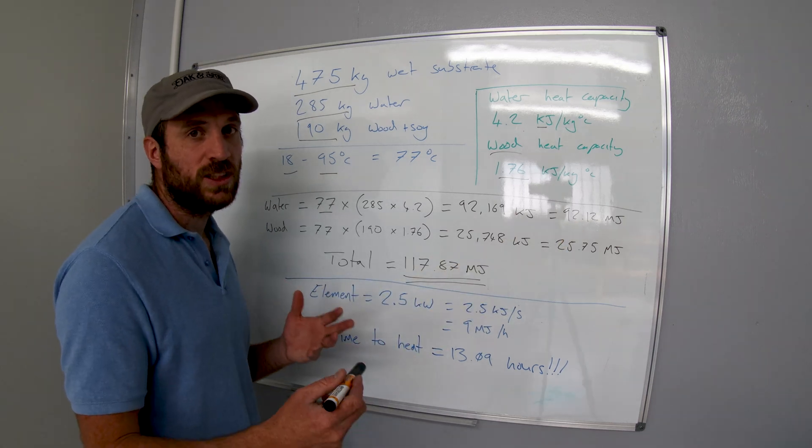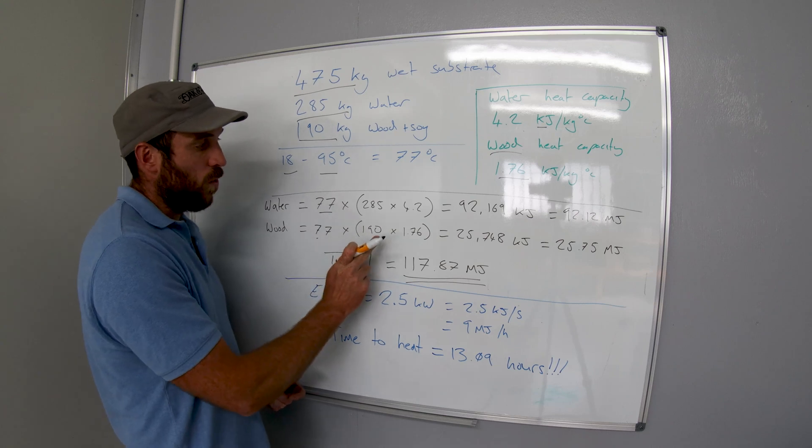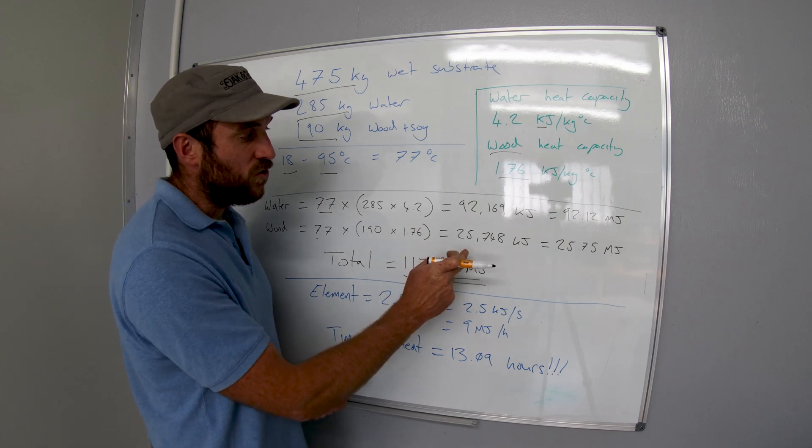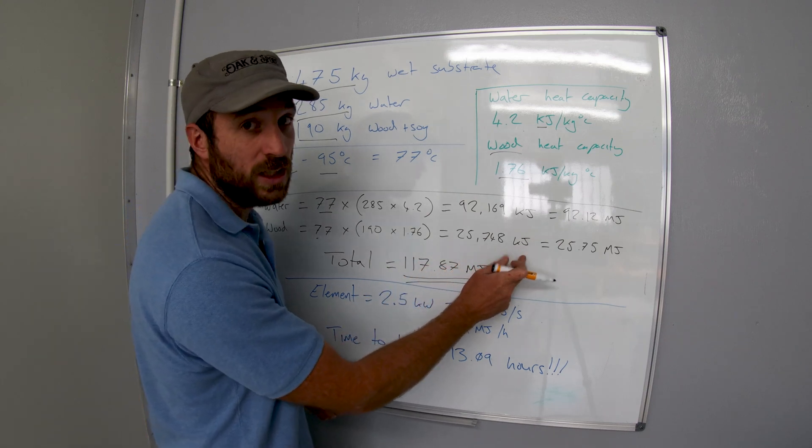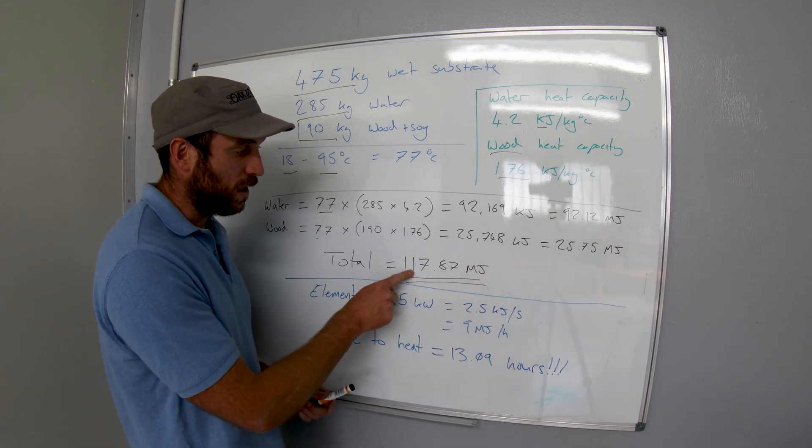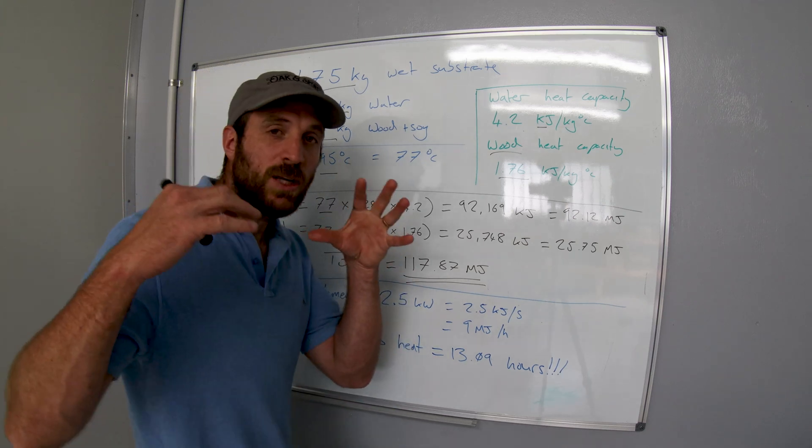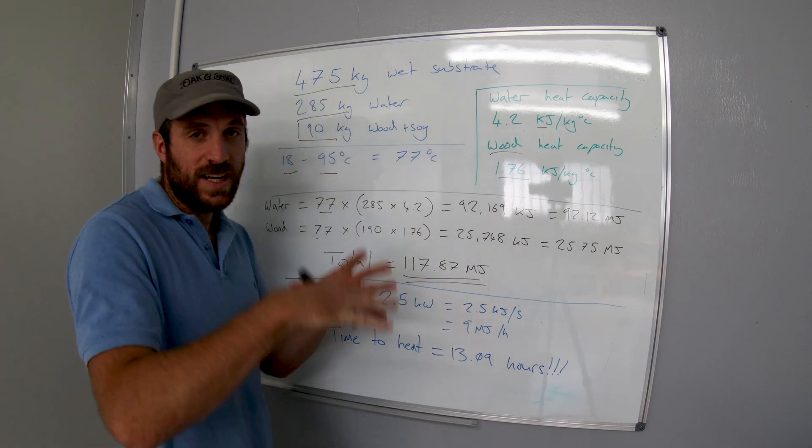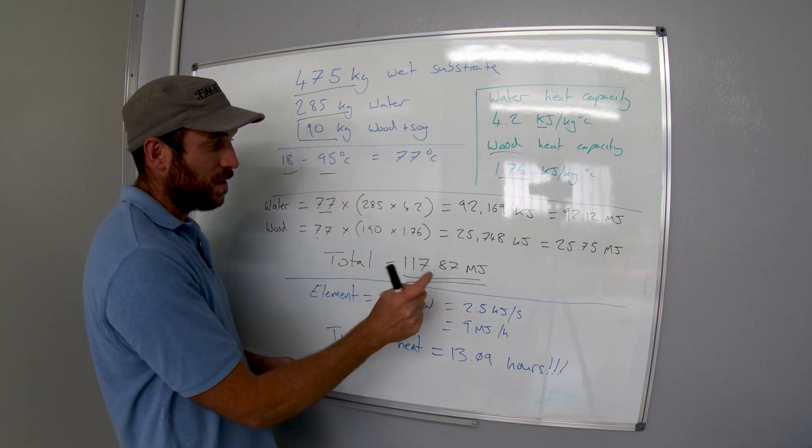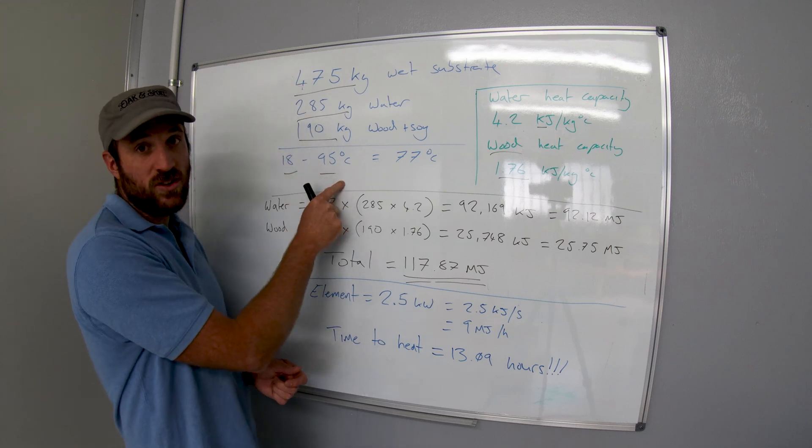So 77 times 285 kilograms times 4.2 kilojoules equals 92,169 kilojoules or 92.12 megajoules. Now we can do the same for the wood slash soy hull: 77 times 190 times the heat capacity 1.76 equals 25,748 kilojoules or 25.75 megajoules. So the total is 117.87 megajoules. That's how much heat we need to get into the sterilizer to heat up that wood from 18 to 95 degrees Celsius.